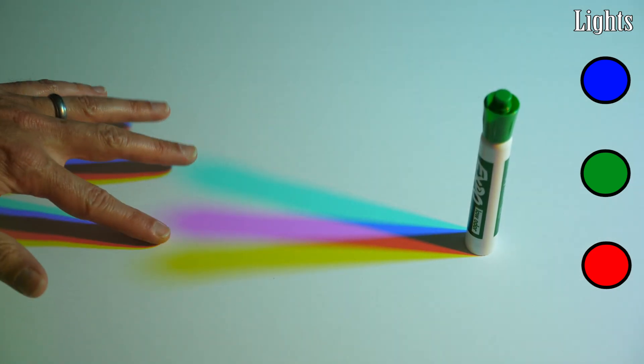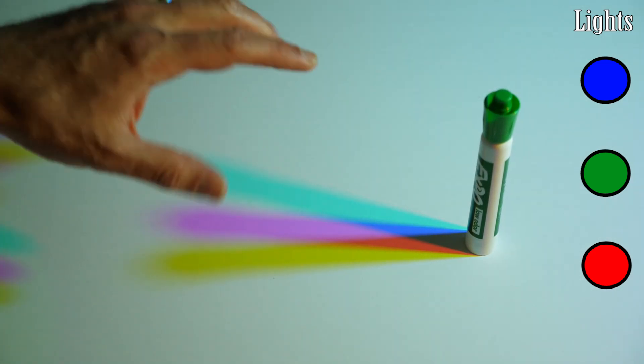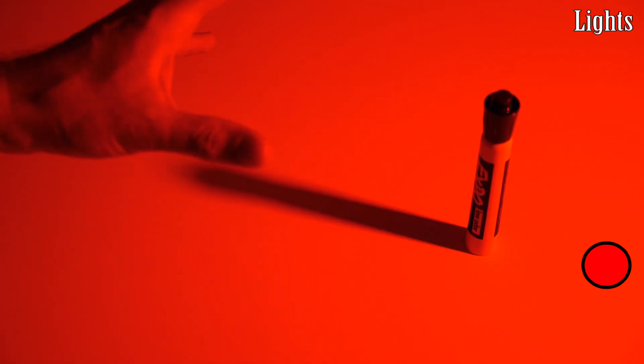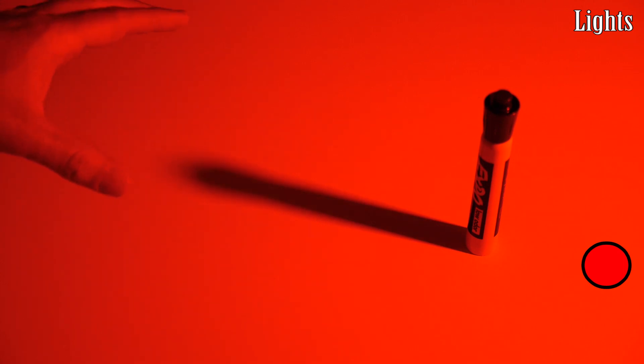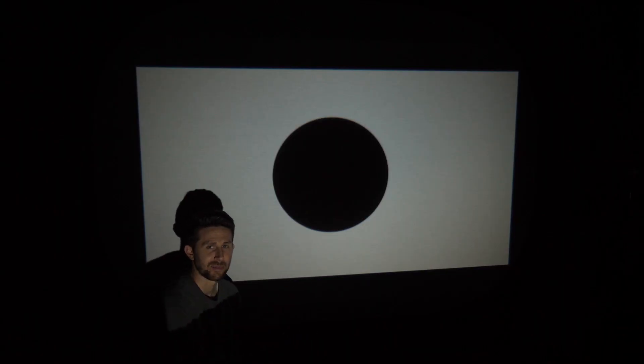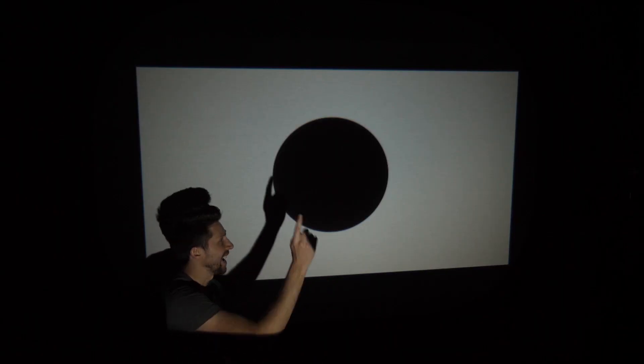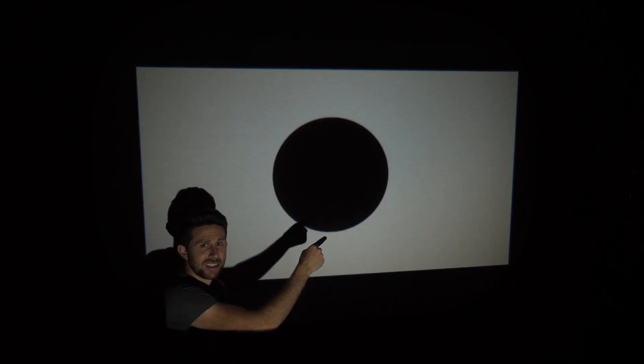So now that we understand how light is made up, now we can talk about what color shadows really are. So black is technically defined as the absence of color. But what black really means in everyday life doesn't mean the absence of color, it really just means less color than what's around it. And I showed this in a previous video where I showed a black spot on a white screen, technically wasn't black, it was just less white than what's around it.